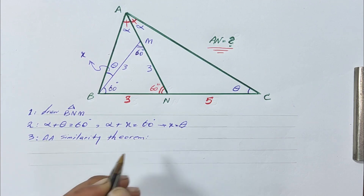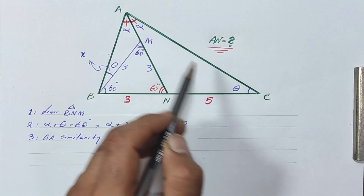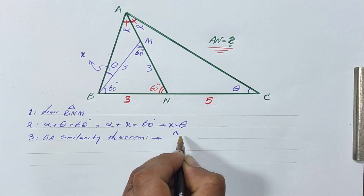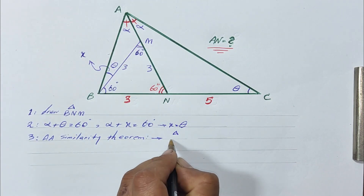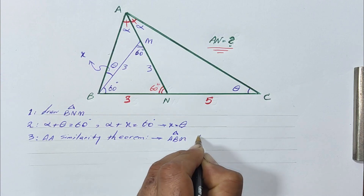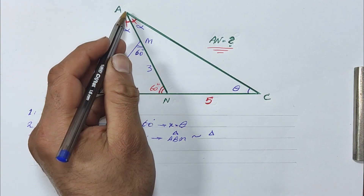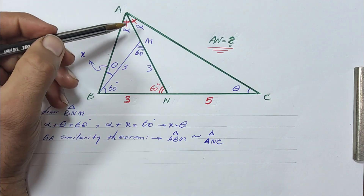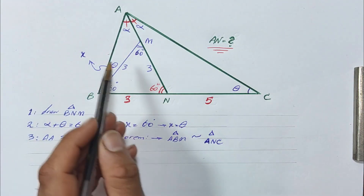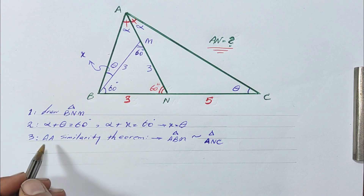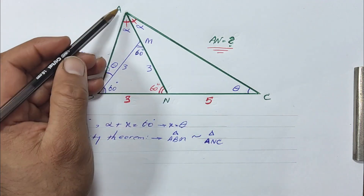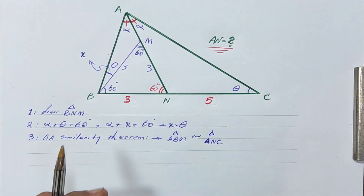Now we have angles alpha and theta in both triangles. Based on similarity, we have two equal angles — alpha and theta here, and alpha and theta here. So these two triangles, ABM and ANC, are similar to each other. You can see alpha, alpha, theta, theta — so based on this, we have two similar triangles ABM and ANC.